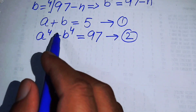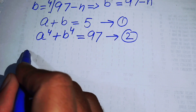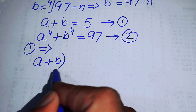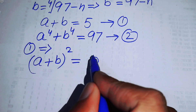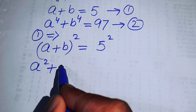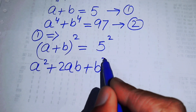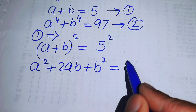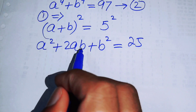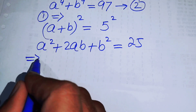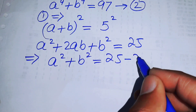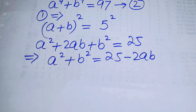Now we simplify equation 1 by squaring both sides: (a+b)² = 5² = 25. Expanding gives a² + 2ab + b² = 25. Rearranging, we get a² + b² = 25 minus 2ab.